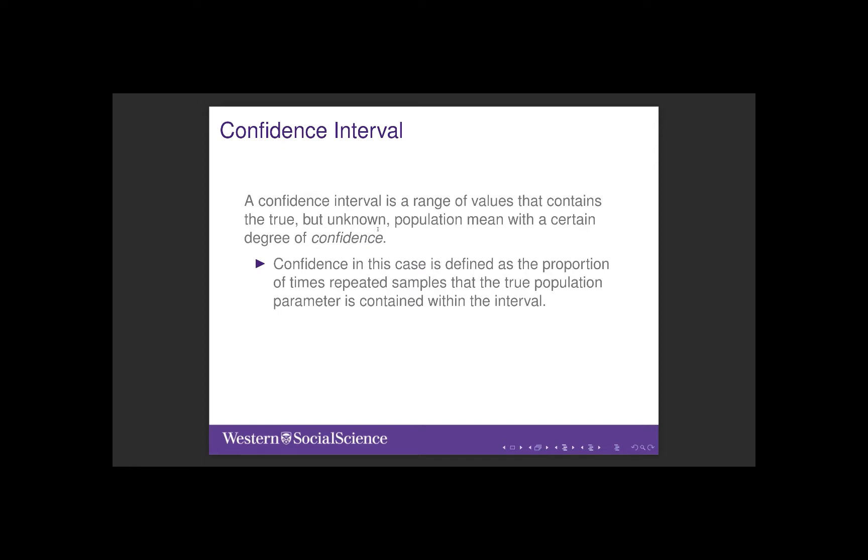If instead we had calculated a 99% confidence interval, then 99% of the intervals would contain the true population quantity, and the others would not.